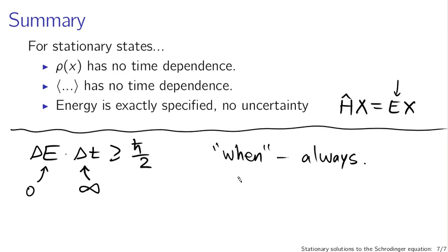That's not the most realistic state in the world, but stationary states are what we get from the Schrödinger equation and they have really nice mathematical properties that we'll start talking about in the next lecture. Stationary states are really important: if you know the stationary states of your system, you know everything about the system and can find the answer to any question you might possibly ask about its quantum mechanical behavior.